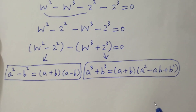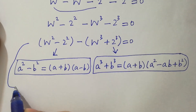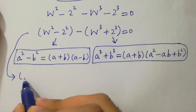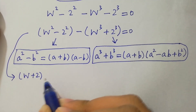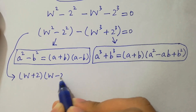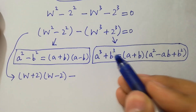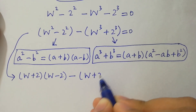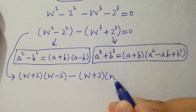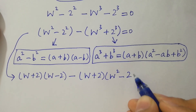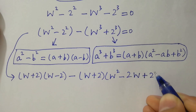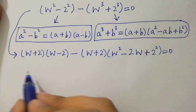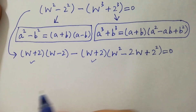Applying these formulas: w squared minus 2 squared becomes w plus 2 times w minus 2. And w cubed plus 2 cubed becomes w plus 2 times w squared minus 2w plus 4, equal to 0. Here w plus 2 can be taken as common.